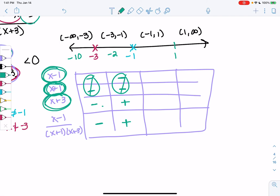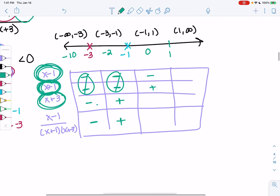Negative 1 to 1, I like 0. 0 is always an easy choice. So 0 minus 1 is negative. 0 plus 1 is positive. 0 plus 3 is positive. So we'll get a negative interval.